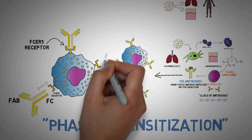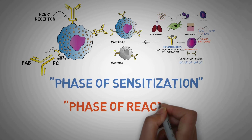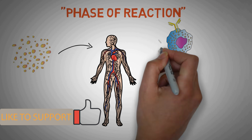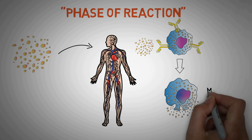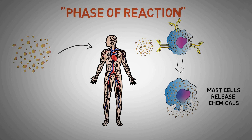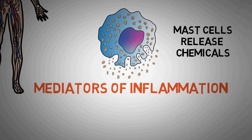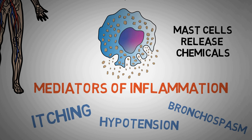These armed mast cells and basophils are waiting for the same allergen to enter the body and start the phase of reaction, which is the second phase of type 1 reaction. The reaction phase begins when the same allergen enters the body again. The IgE antibodies recognize these allergens and, since these antibodies are attached to mast cells and basophils, they signal the cells to release lots of chemicals. These chemicals are known as the mediators of inflammation and are responsible for symptoms of immediate hypersensitivity like itching, hypotension, bronchospasm, and shock.